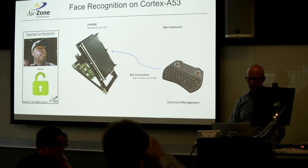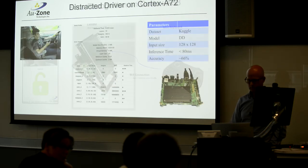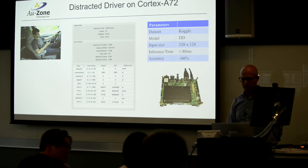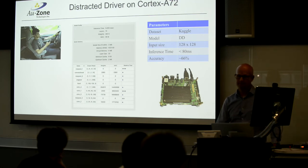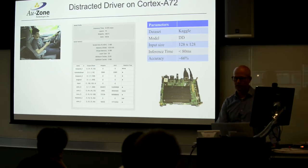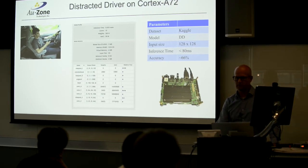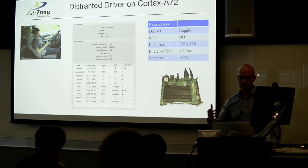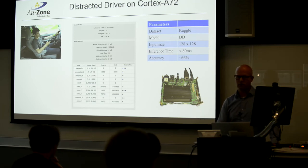In terms of optimizing for power, the primary tool is reducing frequency. You can also play around with which memory you're using depending on the device, but frequency is probably the biggest lever. And it's a system design problem — if you don't need to do inference all the time, can you do it once every hour or once every minute? What makes sense for your application?